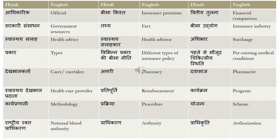The first word is adhikarik, which means 'official'. Bhima kist means 'insurance premium' — premium is nothing but kist, which can also be translated as installment, but in this context it means premium. Next is tulna, meaning 'financial comparison'. Sarkari sansadhan means 'government resources' — sarkari is government, sansadhan is resources. Tathya means 'fact'. Bima udyaog means 'insurance industry' — udyaog is industry.